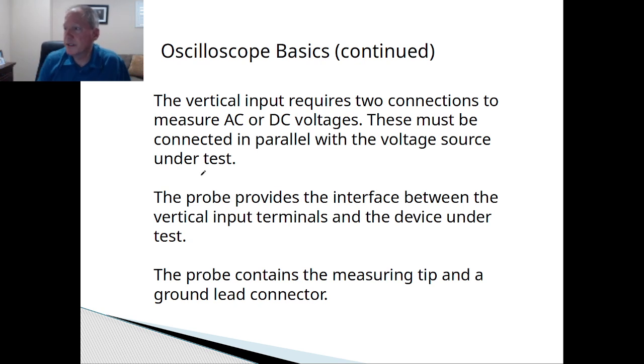Now the vertical input requires two connections to measure AC or DC that must be connected in parallel with the voltage source under test. So remember when you measure voltage, say you're going over R1, you just take the probe and you put it across R1, right at the bottom of R1 from the side that goes to the ground then over R1. And that will show you the voltage across R1.